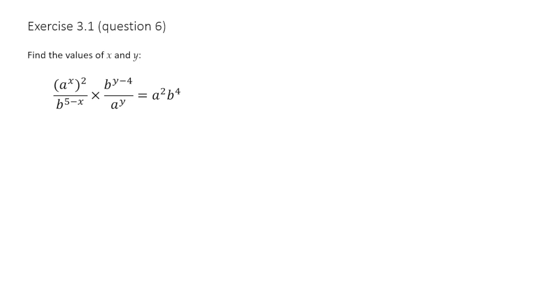So I'll just write them here. Here we've got rule 1, and rule 1 is that if we have a to the power of m all to the power of n, then that is equal to a to the power of mn. In other words, we multiply the powers.